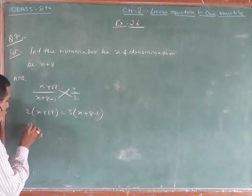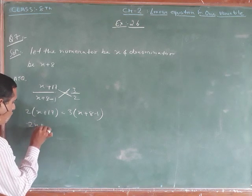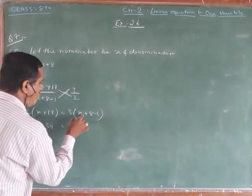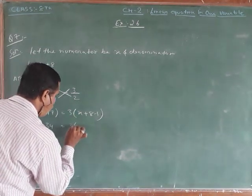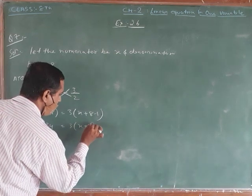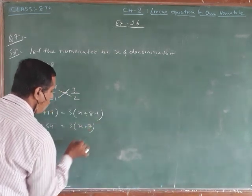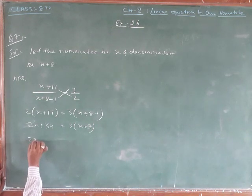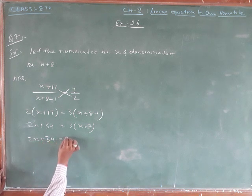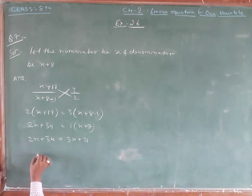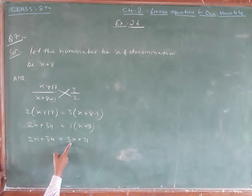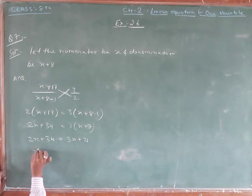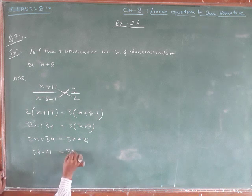Setting up the equation: 2 times x plus 17 equals something. Working through: 2x plus 34, then 2x equals 24, and finally solving for x.